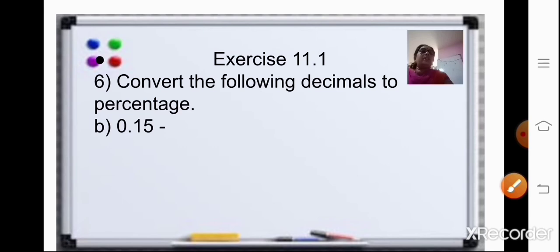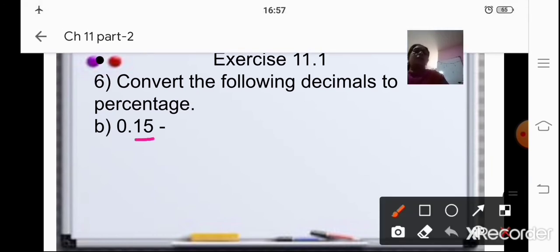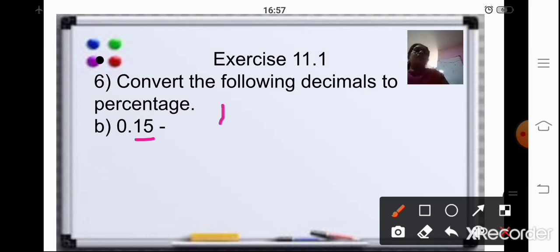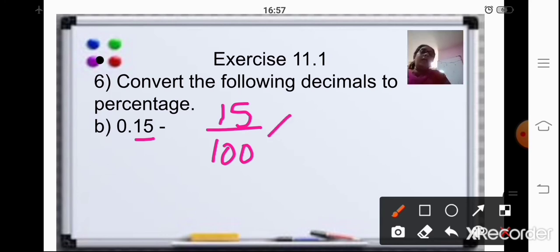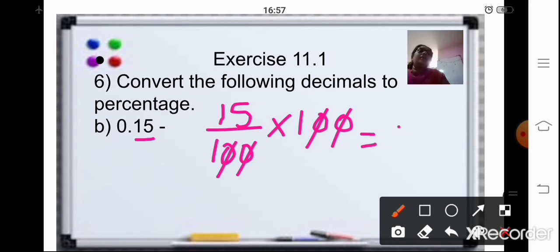Now let us start with the exercise sums. Question 6: convert the following decimals to percentage. For 0.15: after the decimal point there are two places, so the fraction is 15/100. Multiply by 100 — cancel the two zeros — and your final answer is 15%.